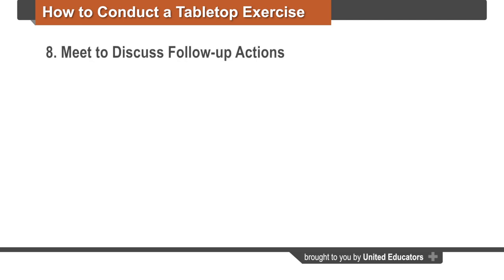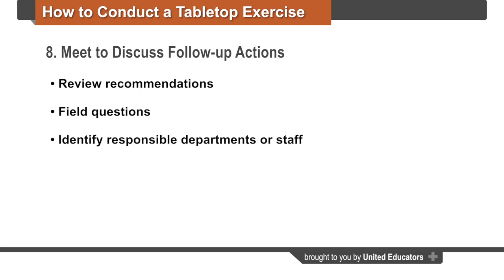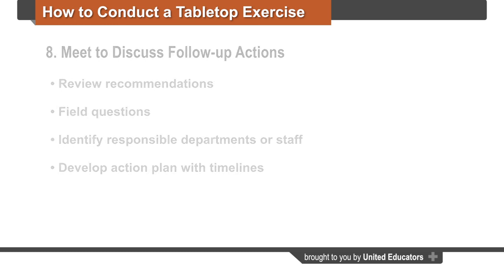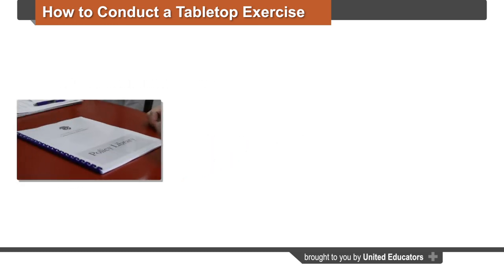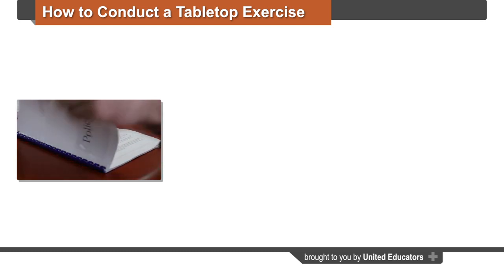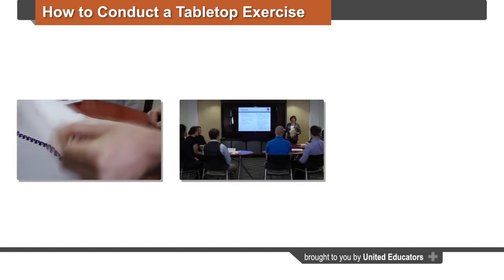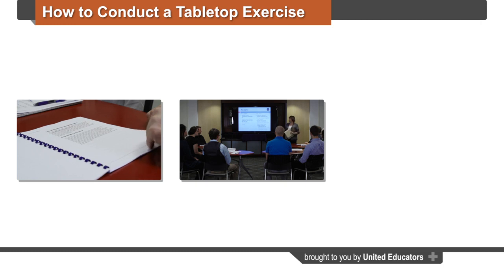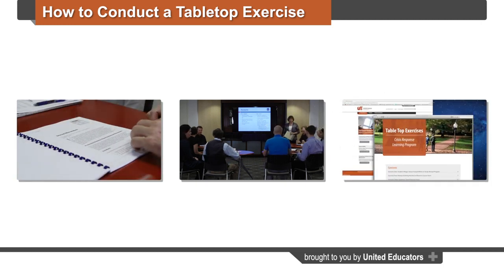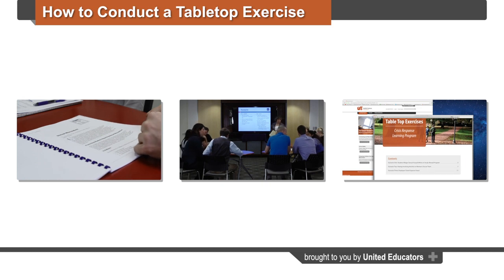Once the report is complete, schedule a meeting with the exercise participants to review the report and its recommendations. Answer participant questions, identify the departments or staff responsible for executing the recommendations, and develop a plan with timelines for completing them. Practicing your institution's crisis response plan is critical to providing an effective response in the face of an actual crisis. Hopefully, after watching this tutorial, your crisis response team will make tabletop exercises a regular practice at your institution. Be sure to review the additional resources available as part of the Crisis Response Learning Program.